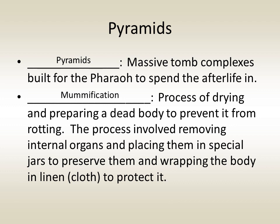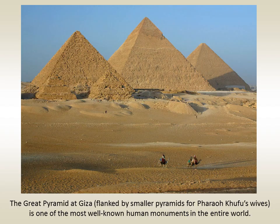The body would then be wrapped in special linen to protect it. The Great Pyramid at Giza, flanked by smaller pyramids from pharaoh Khufu's wives, is one of the most well-known human monuments in the entire world.